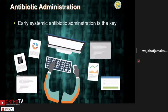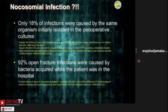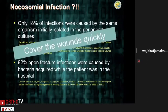Most acute infections are caused by pathogens acquired in the hospital. Most open fracture infections are caused by gram-negative and gram-positive staphylococcus organisms. Studies show that infecting organisms were isolated in only 18% of operative cultures, and another study found that 92% of open fracture infections were caused by bacteria acquired while the patient was in the hospital. This tells us two things: initial cultures, if taken, have limited significance; and secondly, you should try to cover the wound as quickly as possible.